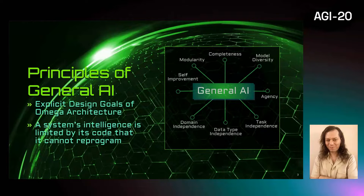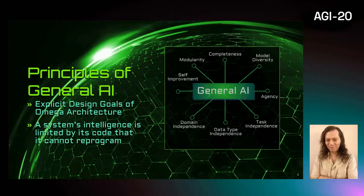Task, domain, and data type independence, as well as agency, to achieve greater independence from programmers. A common thread of these principles is maximizing the system's ability to reprogram itself. A system's intelligence is limited by its code that it cannot reprogram. Therefore, these principles suggest a liberal use of unsupervised learning and meta-learning approaches, as well as autonomy, to increase the system's independence from a human programmer, resulting in an open-ended system that is free to evolve on its own.